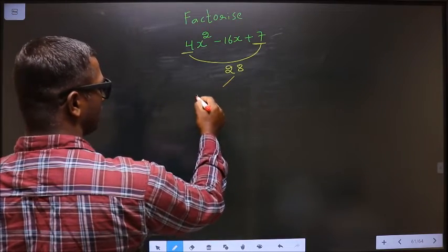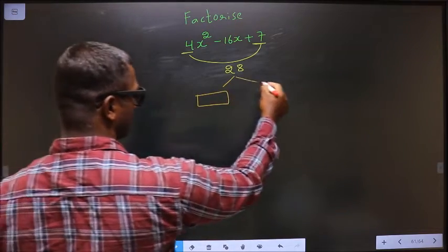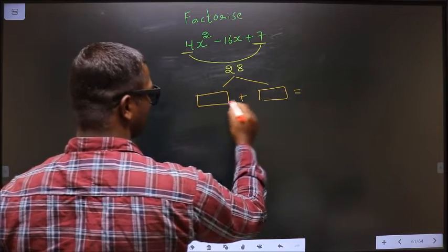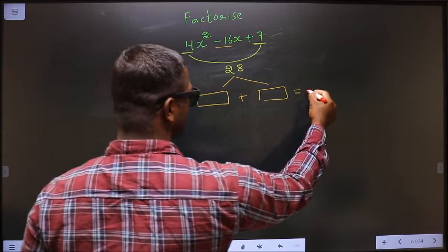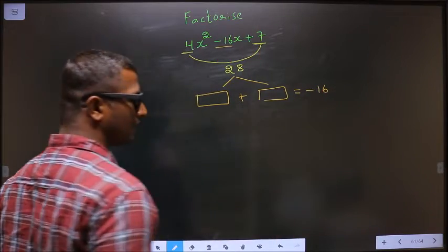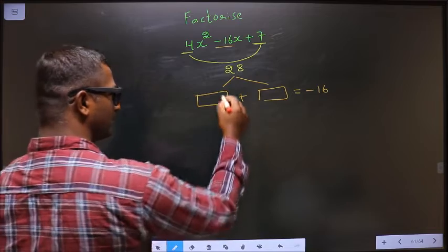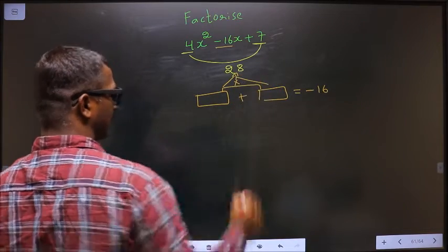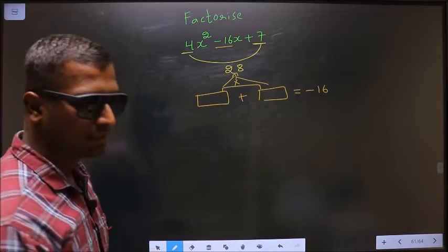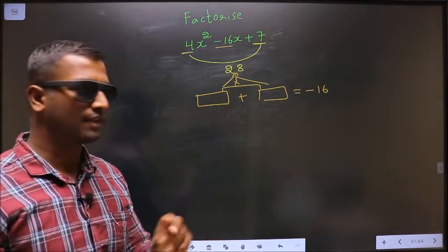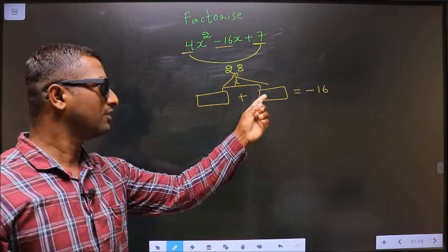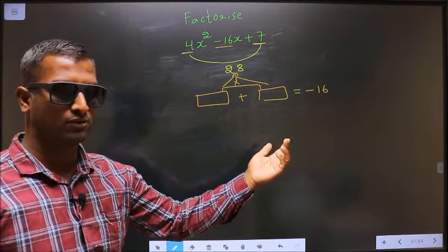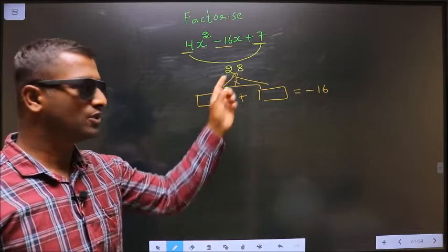Now you should look out for 2 numbers such that when you add the 2 numbers you get the x coefficient, that is minus 16, and also when you multiply the 2 numbers you should get 28. Look out for 2 numbers such that when you add you get minus 16, and when you multiply you should get 28.